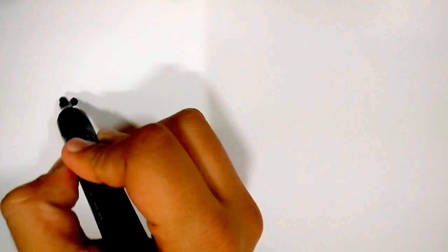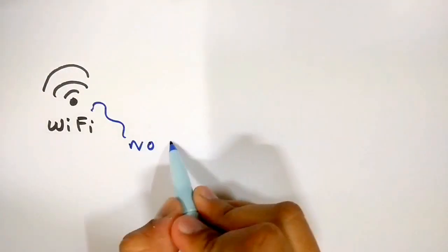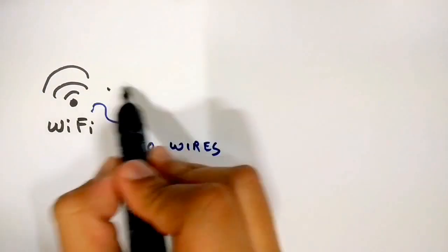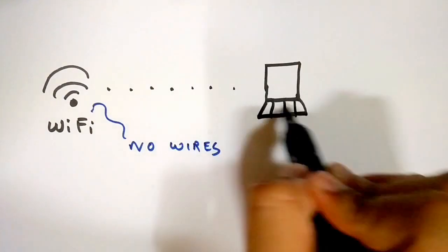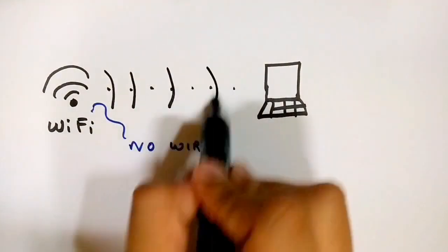And then came Wi-Fi. Wi-Fi does not use wires or electric pulses. It uses electromagnetic waves to transmit the binary information to your computer.